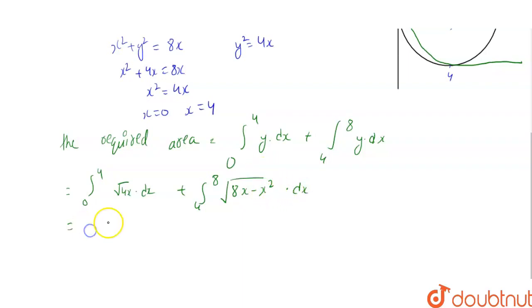So, we can take, on simplifying this, we can take 2, integral 0 to 4, under root x dx, plus, we can write it as, 4 squared minus x minus 4 squared under root. That is, equation of circle.